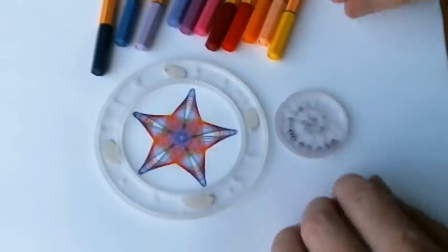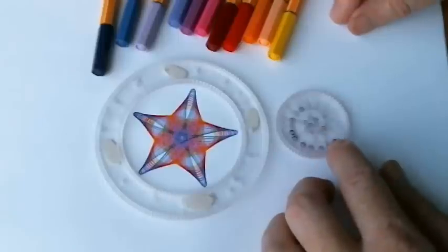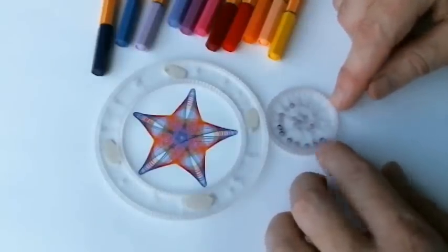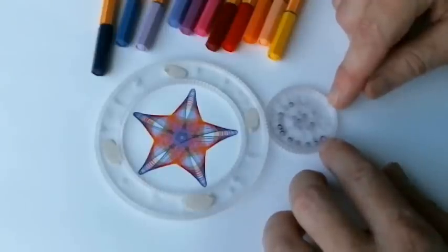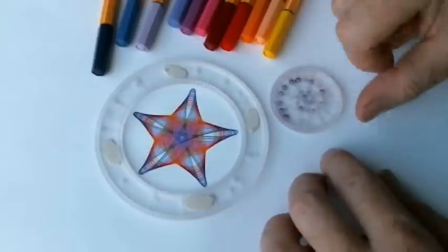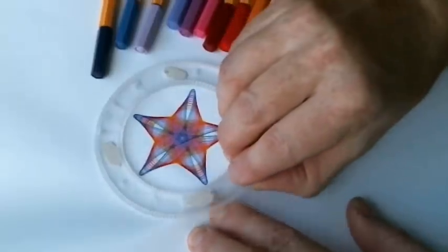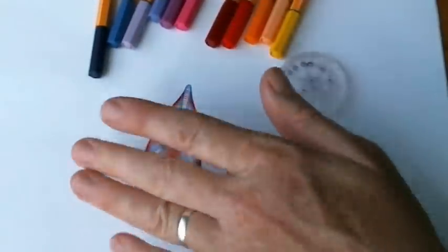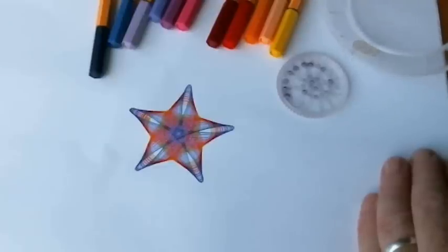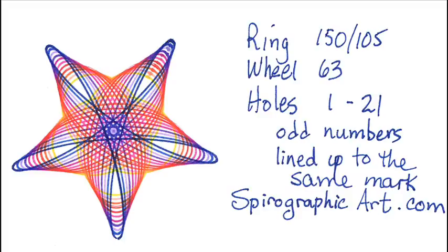That's ring number 150/105 from the spirograph, either the old spirograph or the newer spirograph. They both work. They're compatible with each other. And wheel number 63 gives you a nice five-pointed star. That could be used in all kinds of crafts or greeting cards. Or maybe give your students at school a star for good work they've done. Have fun. You can see more of this on spirographicart.com.